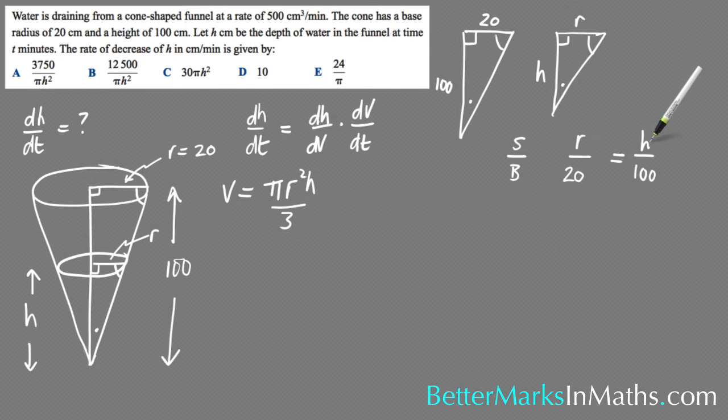So from here, multiplying both sides by 20, you end up with r equals 20h/100, and then dividing both the top and the bottom by 20, you get r equals h/5. And that's the connection between r and h.